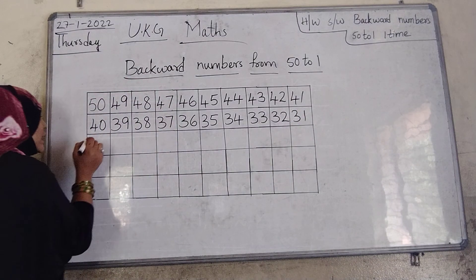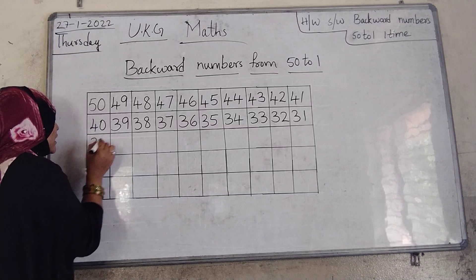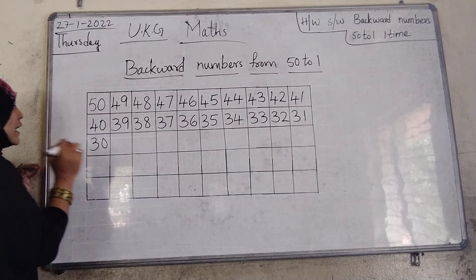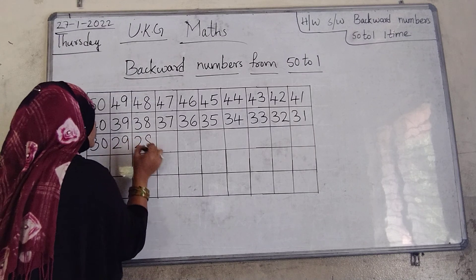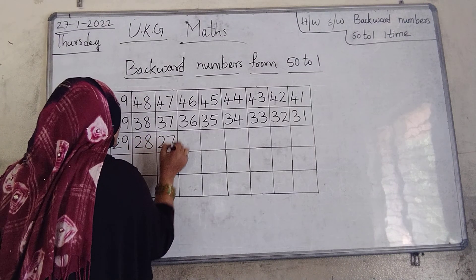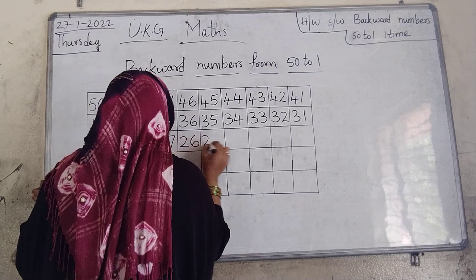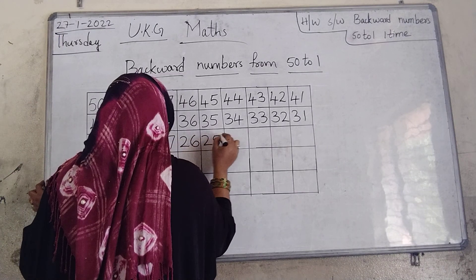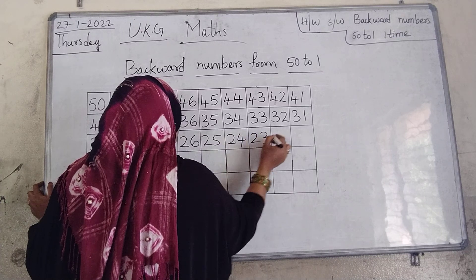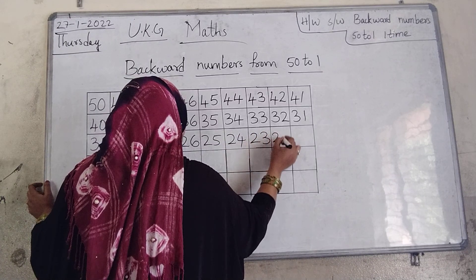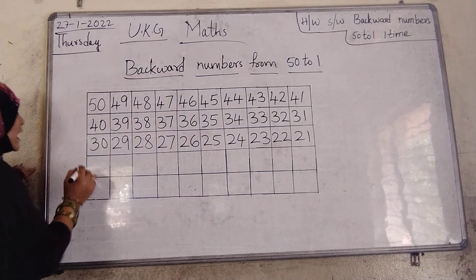After 40, before 40, 30. 29, 28, 27, 26, 25, 24, 23, 22, 21.